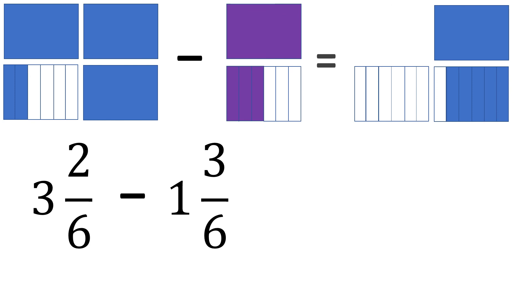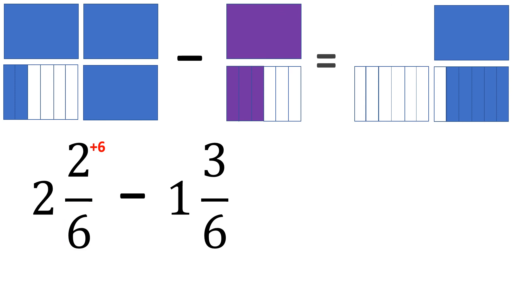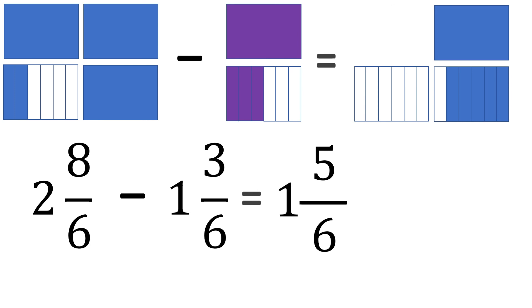We cannot subtract the fractions directly because 2 minus 3 is not possible. So 2 needs to borrow from 1 whole. We subtract 1 whole from 3 and add 6 to 2 — why 6? Because the denominator is 6, meaning for every 1 whole there are 6 parts. So now 3 minus 1 is 2, and 2 plus 6 is 8 — giving us 2 and 8 sixths minus 1 and 3 sixths. Copy the denominator 6: 8 minus 3 is 5, and 2 minus 1 is 1. So the final answer is 1 and 5 sixths.